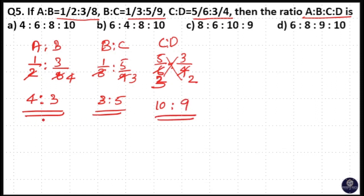Here you can see B is common here. So A is to B is to C is 4 is to 3 is to 5.